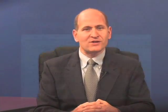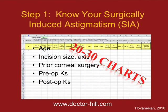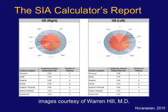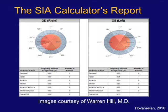The first step in doing LRIs is to know the effect of your corneal incision — your so-called surgically induced astigmatism or SIA. For most surgeons who use a temporal clear corneal approach, the incision causes about a half a diopter of flattening at the axis of the incision. To calculate your own SIA more exactly, you can use a simple and handy calculator available at the website shown here. You'll need to input each patient's age, the incision size and axis, any history of prior corneal surgery, and pre and post-op keratometry values. You'll do this for 20 or 30 patients, and it will give you a report showing how much astigmatic effect your cataract incisions have at any axis where you have input data.